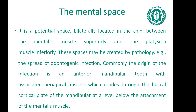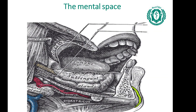The mental space is a potential space bilaterally located in the chin between the mentalis muscle superiorly and the platysma muscle inferiorly. These spaces may be created by pathology — the spread of odontogenic infection. Commonly, the origin of the infection is an anterior mandibular tooth with an associated periapical abscess which erodes through the buccal cortical plate of the mandible at the level below the attachment of the mentalis muscle.